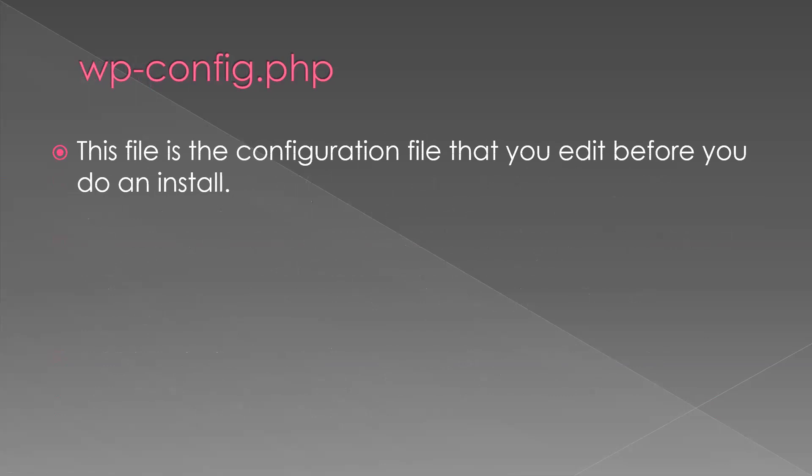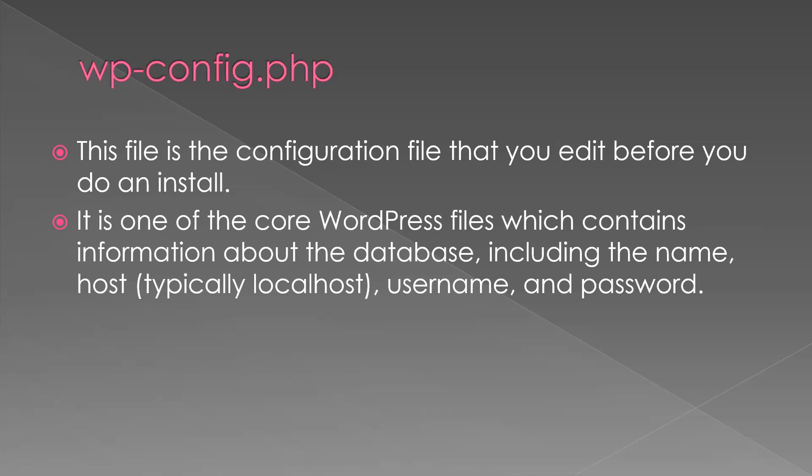Next is wp-config.php. This file is the configuration file that you set up before you install WordPress. It is one of the core WordPress files and contains information about the database, including the database name, host, username, and password.